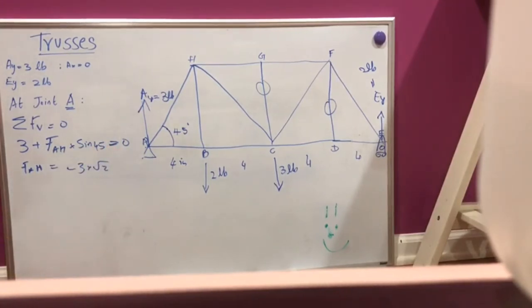Similarly, we have to do the same thing for the horizontal. The forces in the horizontal is going to be zero at point A, at joint A. In that case, FAB plus FAH into cos 45.